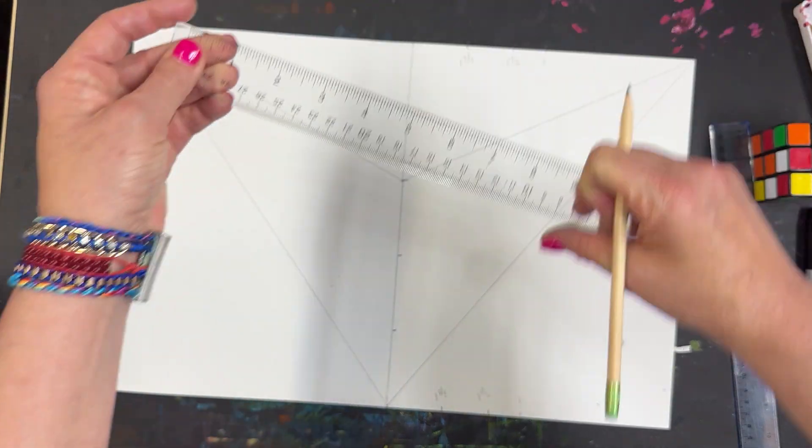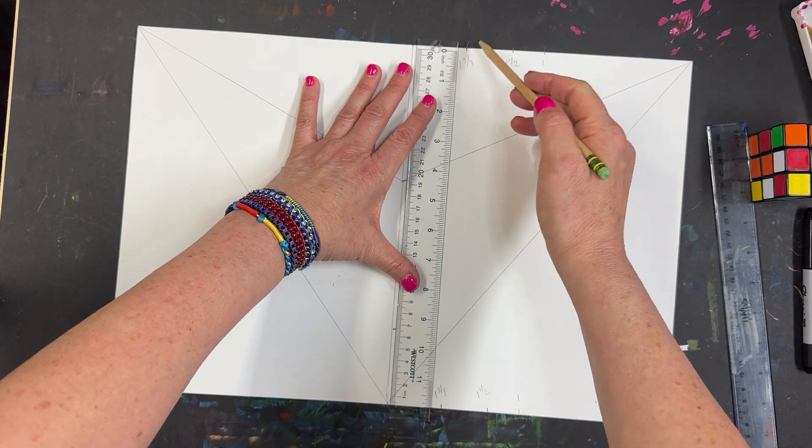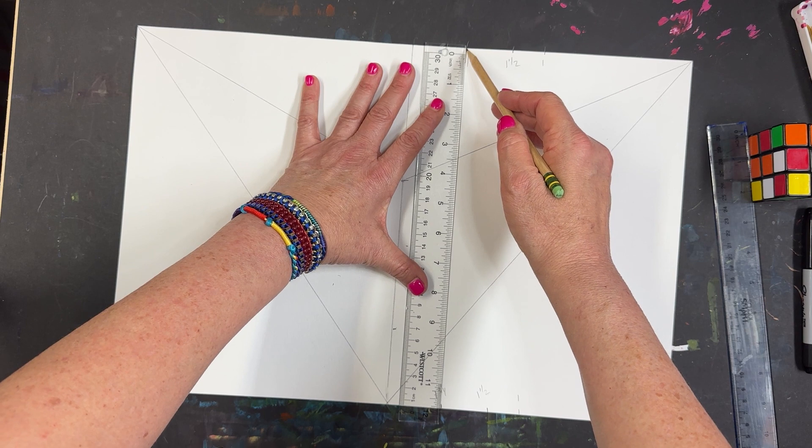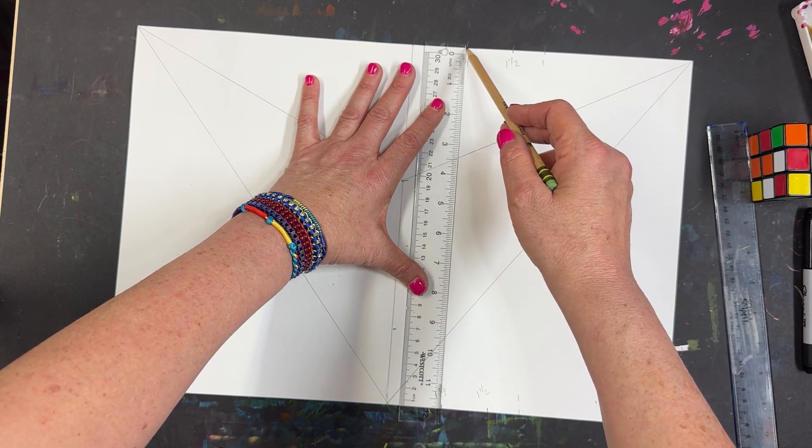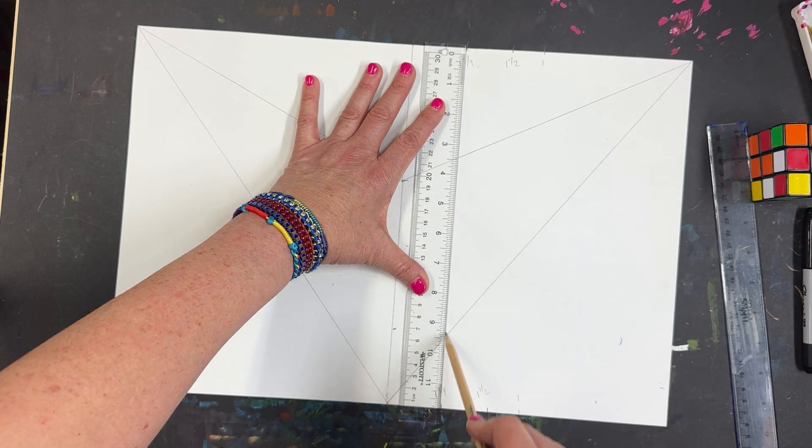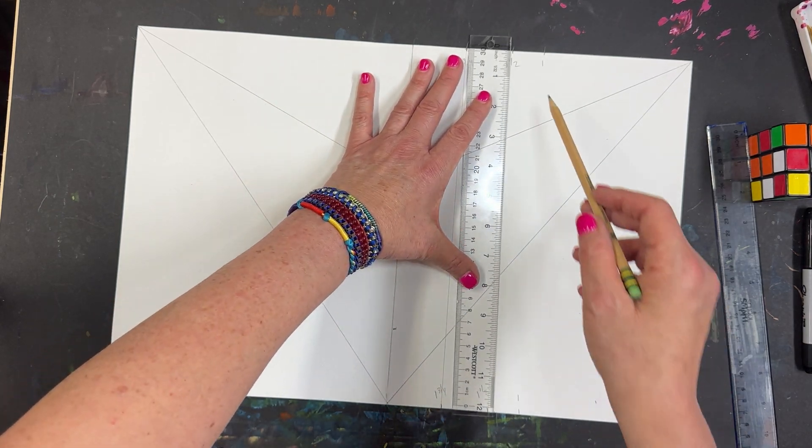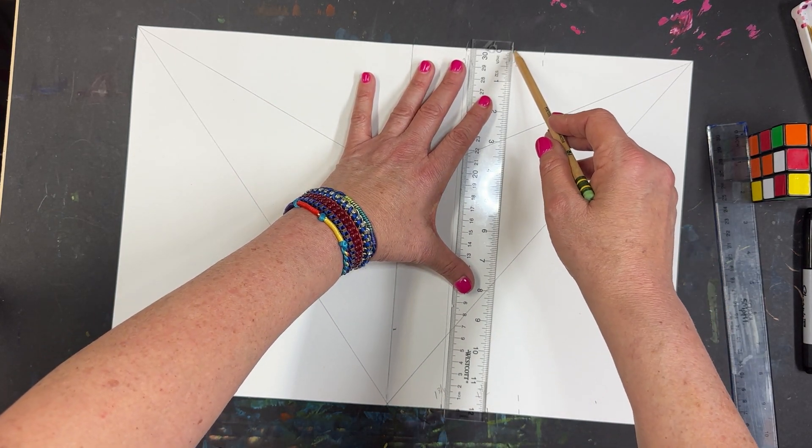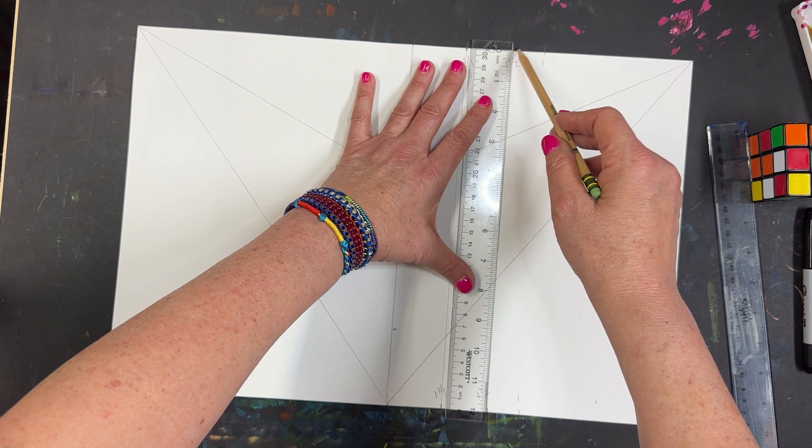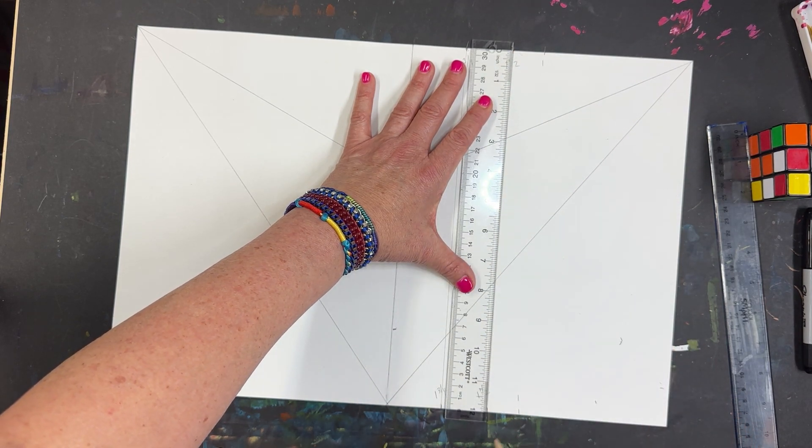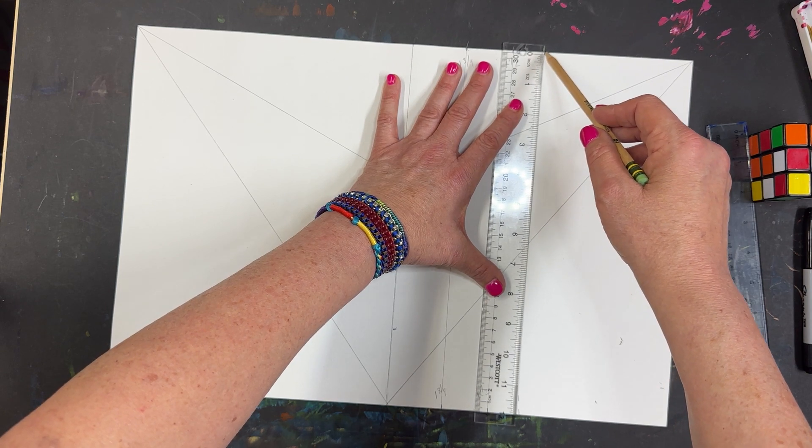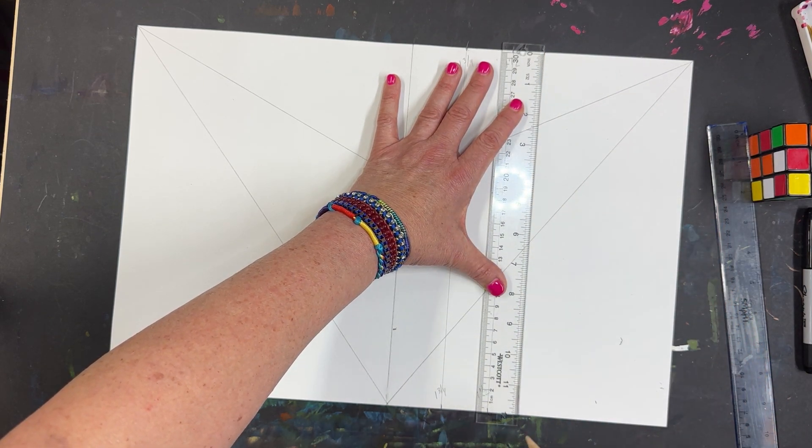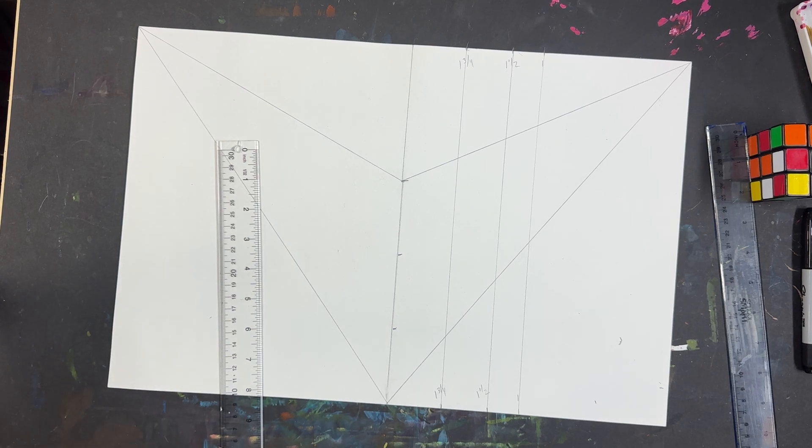Now let's connect those lines. The reason why we're doing it on the top and the bottom is so that the lines are nice and vertical. Make sure you hold your ruler steady.